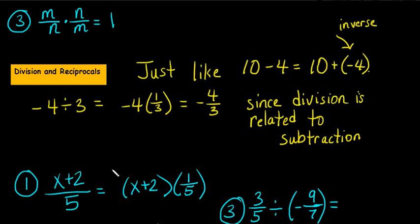Division and reciprocals. And since division is related to subtraction, just like multiplication is related to addition, it's like addition over and over, division is like a quicker form of subtraction. I can say 10 take away 4 equals 10 plus negative 4, and this is the inverse. So I'm going to do the same thing when I divide. Negative 4 divided by 3 equals negative 4 times the inverse of 3, which is 1 third, and that equals negative 4 thirds.